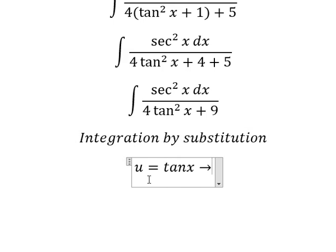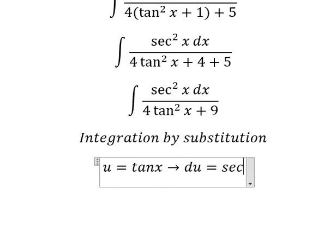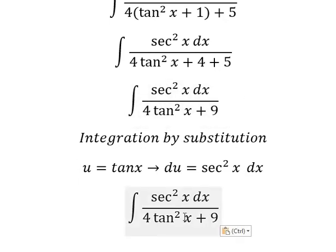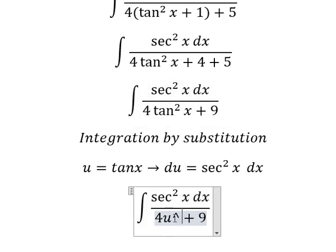Later we do first derivative for both sides and we have secant of x square dx. So this one we change by u square, this one we change by du.